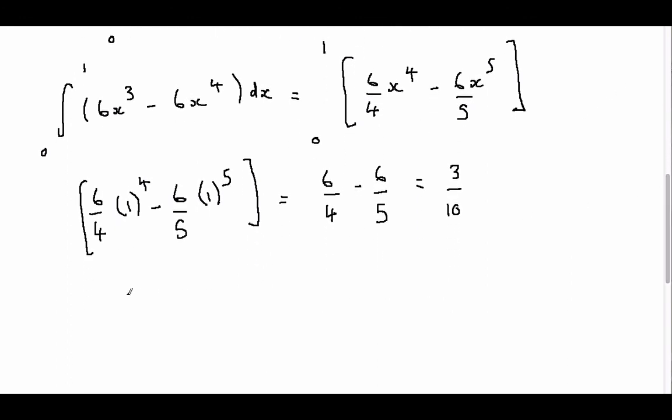So therefore our variance is 3 over 10 minus 1 half squared which is minus 1 quarter. And therefore simplifying this we get 1 20th. So the variance is 1 20th.